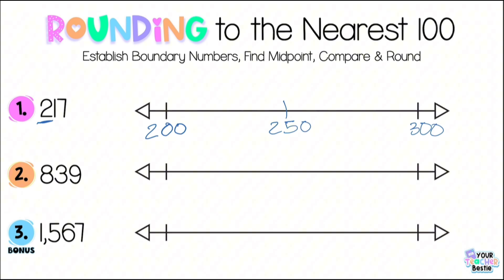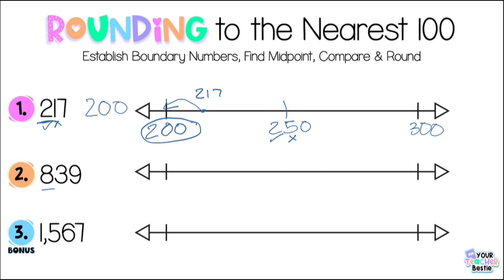Step three: compare 217 with the midpoint 250. Is 200 and 200 equivalent? Yes. What about one ten and five tens? No — one ten is less than five tens. Since our number is less than the midpoint, we're going to round down to 200.